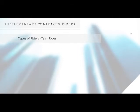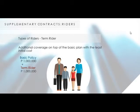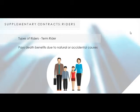Types of Riders: Term Rider. Additional coverage on top of the basic plan with the least initial cost can be provided by a term rider. It pays death benefits due to natural or accidental causes. The most common type is the family income rider, which is a decreasing term.